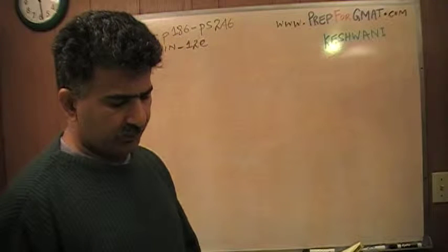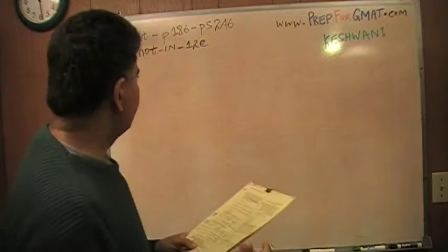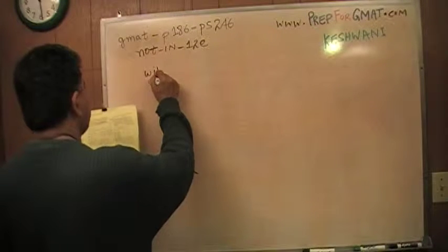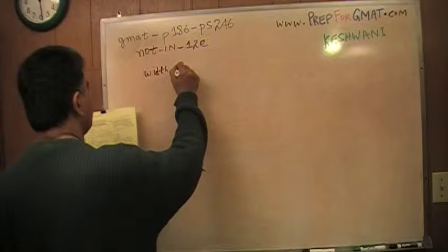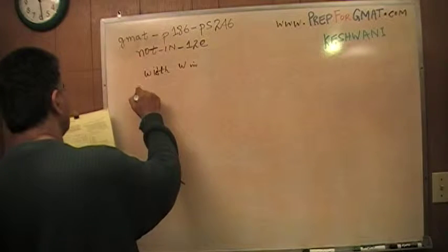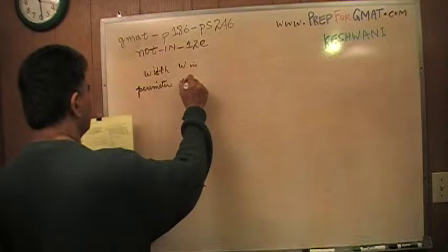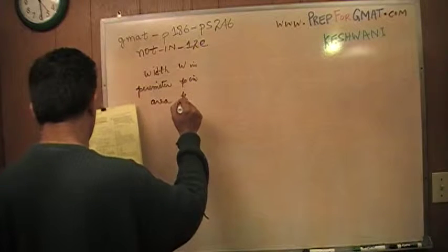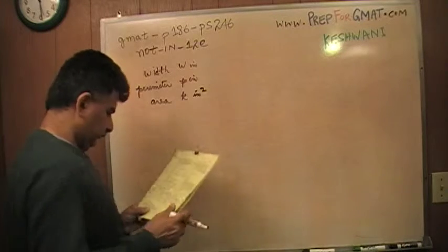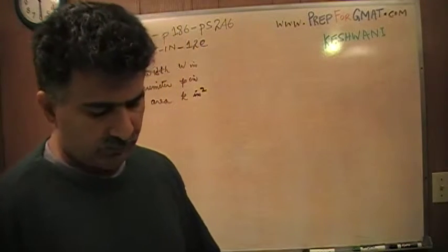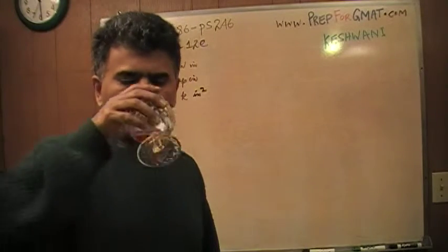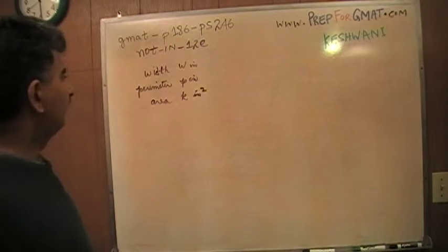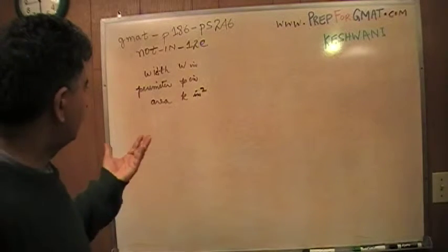It says the circuit board is designed to have a width W inches, perimeter P inches, and area K square inches, and the question simply is which of the following equation must be true. The idea is to use this information and somehow manipulate it until we find out what we are looking for.